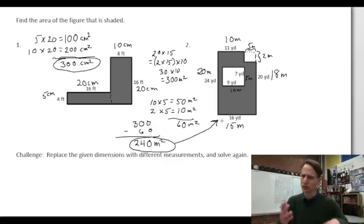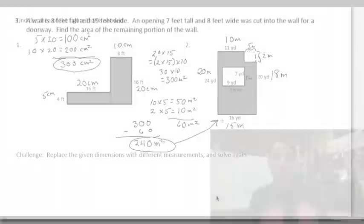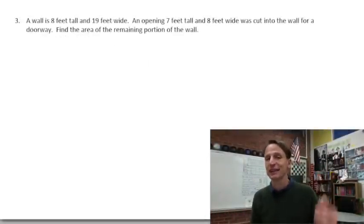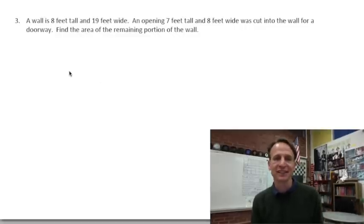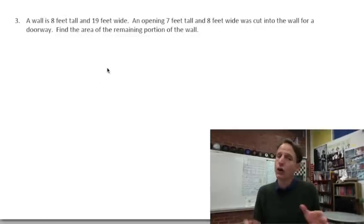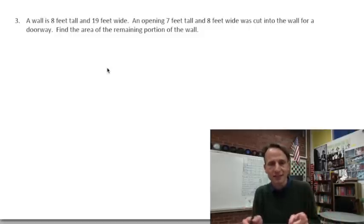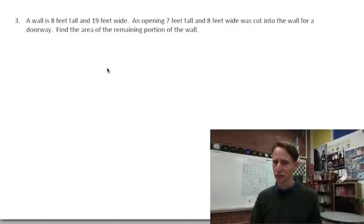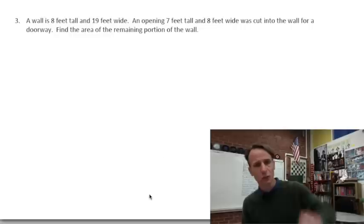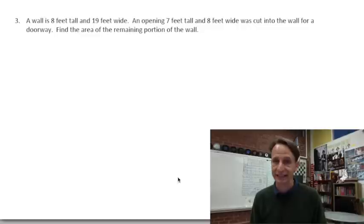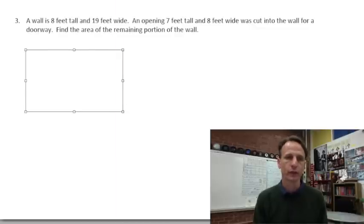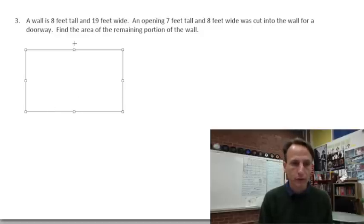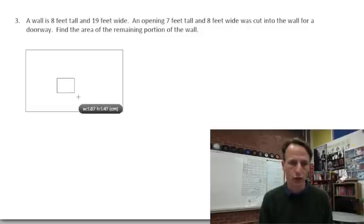And now we're going to go on to number, well, 2 slash 3. It's number 3, but it's really, okay, let's just do it. A wall. A wall. Where is this wall? I don't know. It's like in space. It's like the obelisk in 2001, a space odyssey. This wall is on Jupiter. And it is 8 feet tall and 19 feet wide. Now it has an opening. Ooh, a portal to another dimension. And this opening is 7 feet tall and 8 feet wide was cut using the passive voice. We know not by whom. An opening 7 feet tall and 8 feet wide was cut into the wall for a doorway by the Jupiterians. Find the area of the remaining portion of the wall, because I guess they want to paint it or something. All right, so here's our wall.